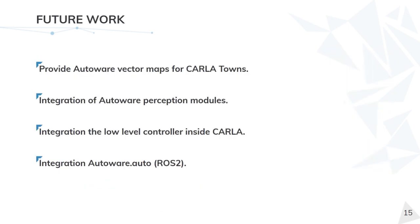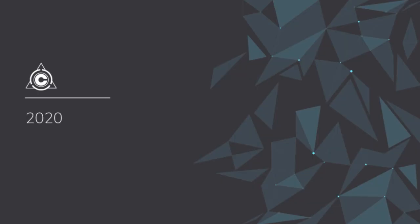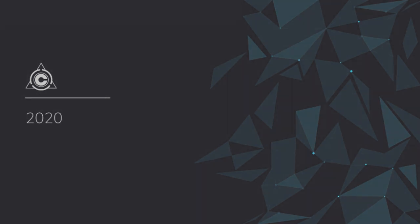Lastly, here are some of the things we are currently working on: providing Autoware vector maps for the Carla towns in both Asian and Lanelet2 formats to enable the Autoware planning modules; integrating the Autoware perception modules; integrating the low-level controller inside Carla to improve response time and avoid possible delays; and integrating Autoware.Auto, which is the next generation of Autoware built on ROS2. Thank you very much for your attention, and don't hesitate to contact us through the Carla forum or Discord with any questions.